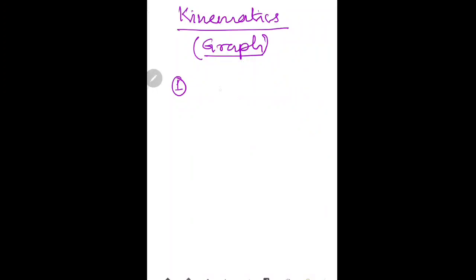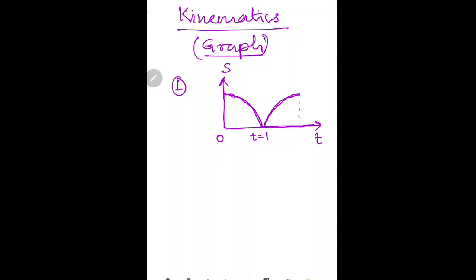Let's start — there are some interesting graph-based problems on kinematics. Watch from beginning to end, you will definitely enjoy it. The first question involves a displacement-time relation. A symmetrical displacement-time graph is shown, with t=0, t=1 second, and t=2 second marked on the time axis.